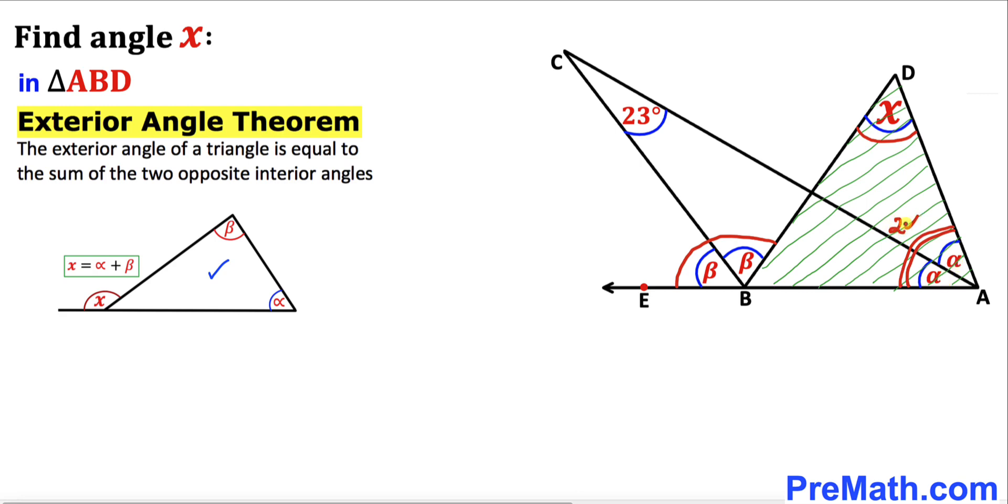And likewise, this exterior angle is beta plus beta, which is 2 beta. Therefore we can write x plus 2 alpha equals 2 times beta. These are our two opposite interior angles and this is our exterior angle. Now let's move 2 alpha to the right-hand side. Therefore, angle x is going to be 2 beta minus 2 alpha.